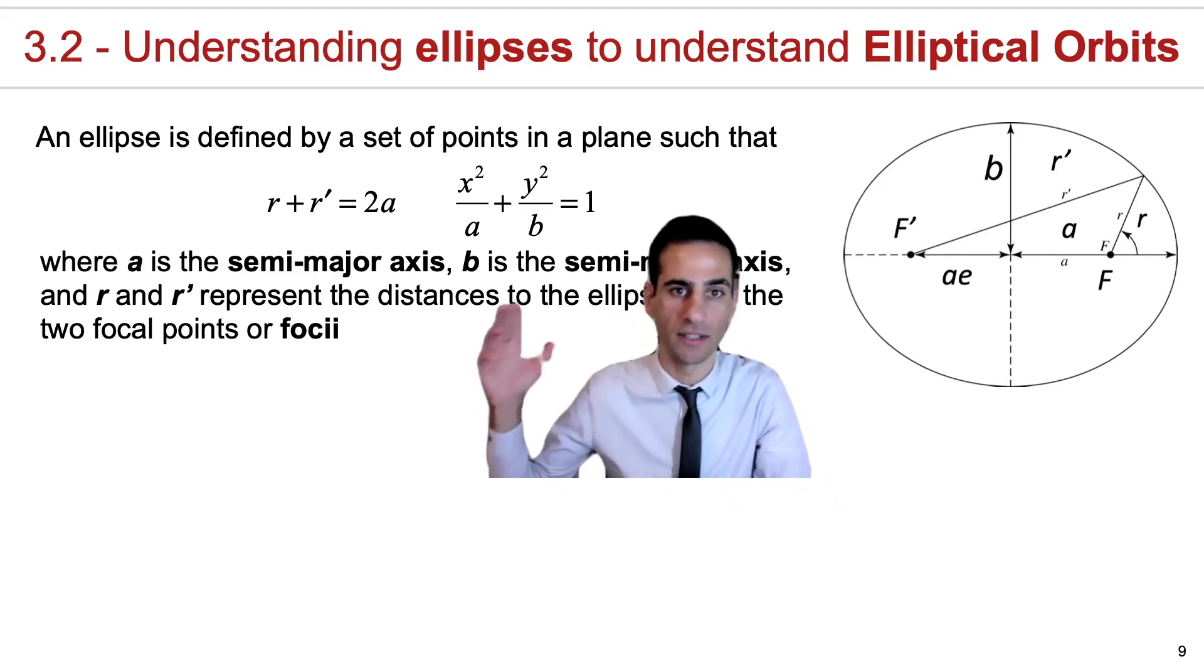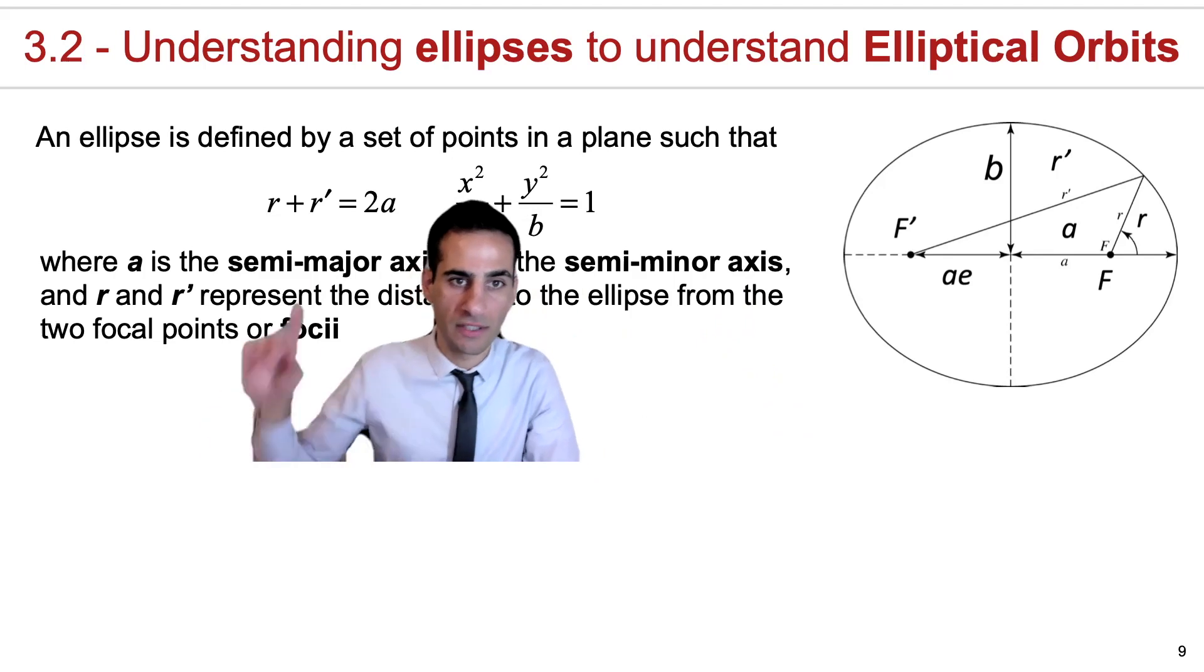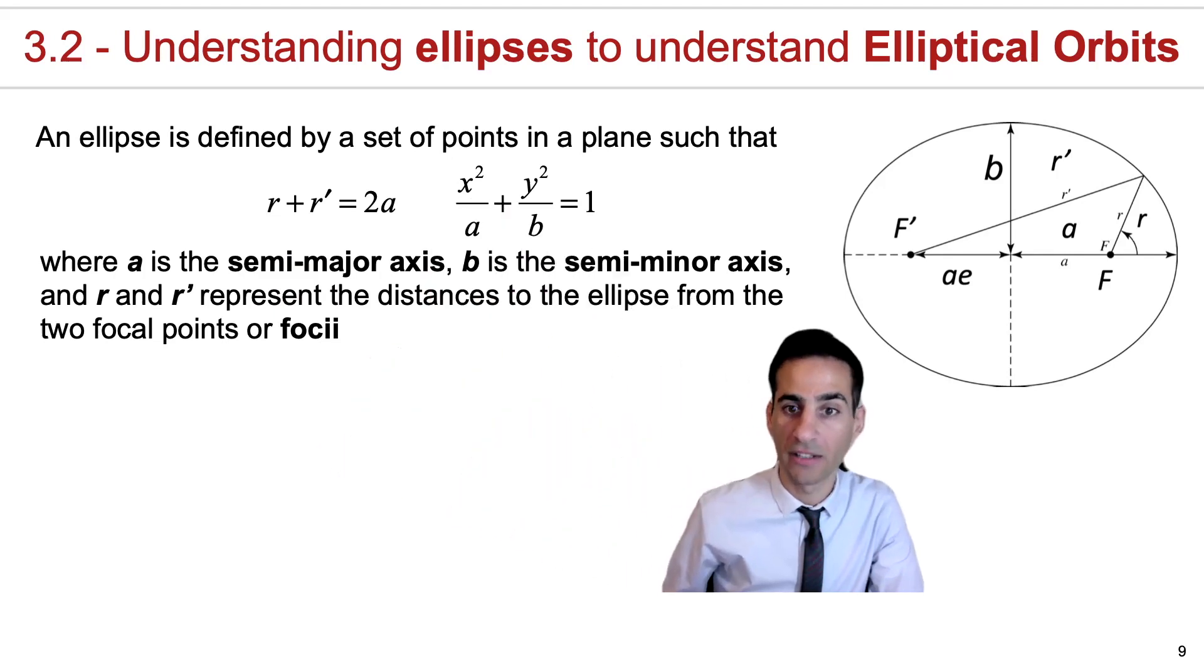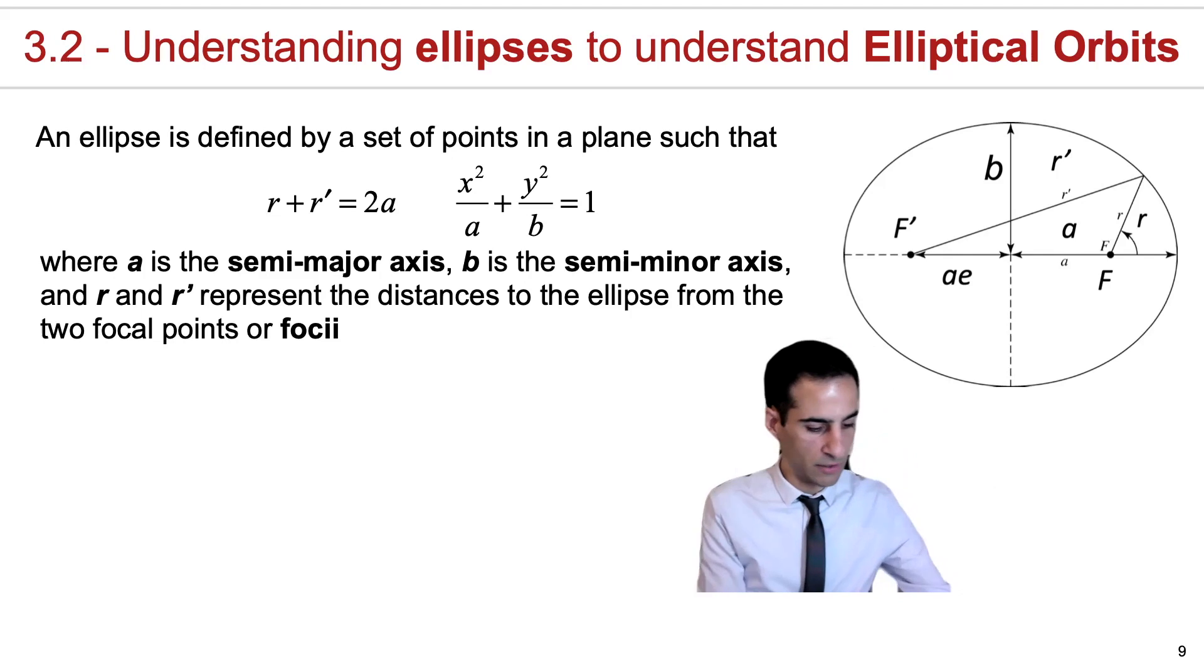You can write an ellipse mathematically with Cartesian coordinates or using the sum of r and r prime being two times the major axis. All the definitions are given here; you can also find them in the lecture notes.